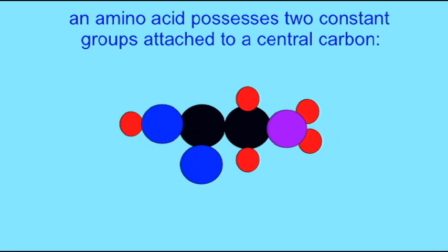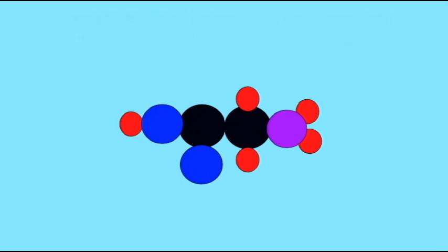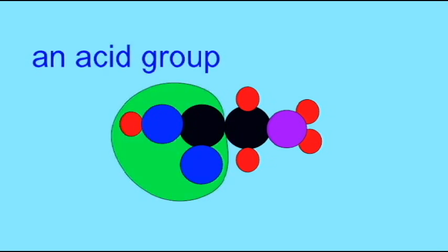Each amino acid has an amino group and an acid group attached to a central carbon. The central carbon is also attached to a hydrogen and to a variable group which varies in the 20 different amino acids.